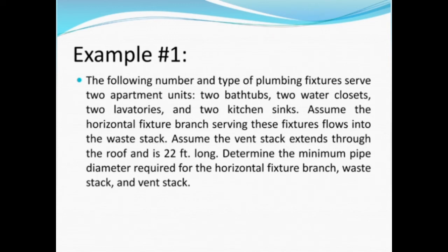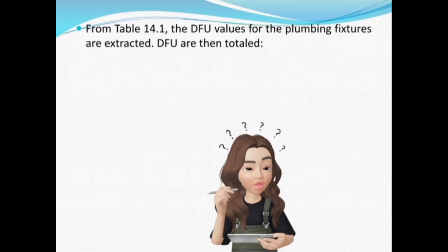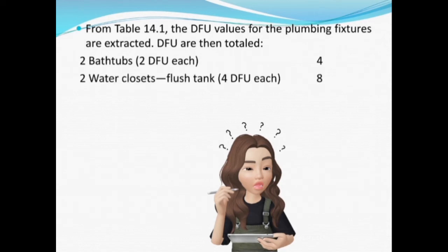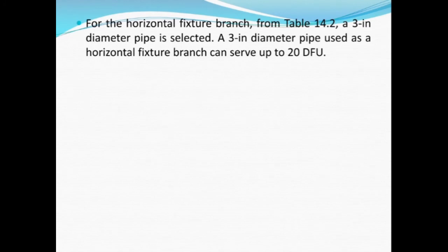Sample problem: Determine the minimum pipe diameter required for the horizontal fixture branch, waste duct, and vent duct. From Table 14.1, the DFU values are: two bathtubs = 2 DFU each = 4; two water closets (flush tanks) = 4 DFU each = 8; two lavatories = 1 DFU each = 2; two kitchen sinks = 2 DFU each = 4; total = 18 DFU. For the horizontal fixture branch from Table 14.2, a 3-inch diameter pipe is selected, which can serve up to 20 DFU.